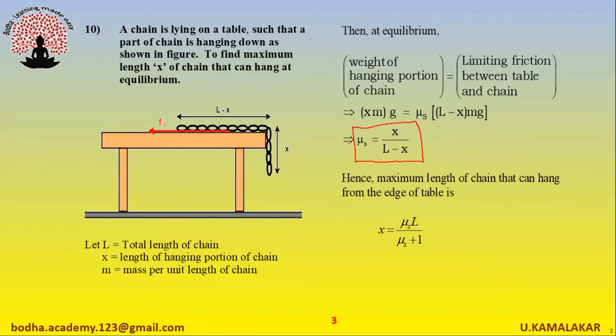The maximum length of chain that can hang from the edge of the table is given as: x equals mu_s times L, divided by (mu_s plus 1).